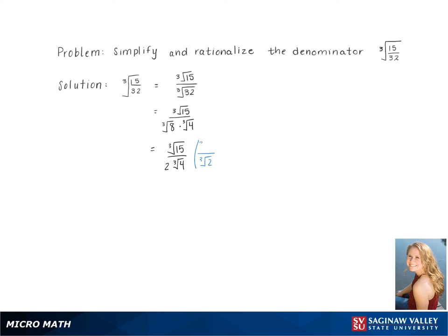So we choose to multiply through by the cube root of 2. Multiplying this through the top and bottom of the fraction gives us the cube root of 30 over 2 times 2. This gives us a final answer of the cube root of 30 over 4.